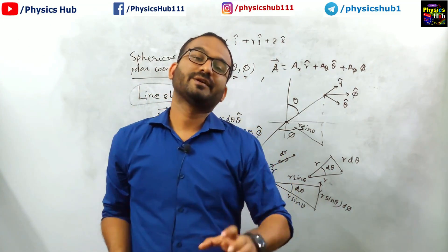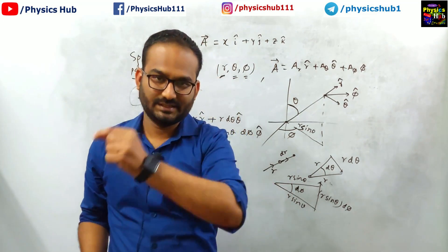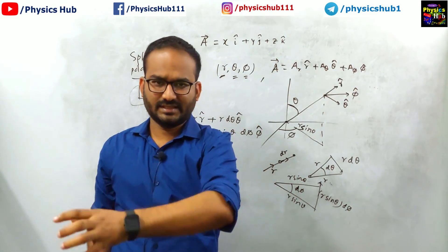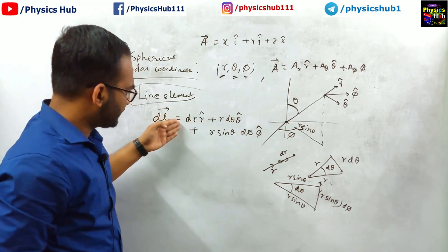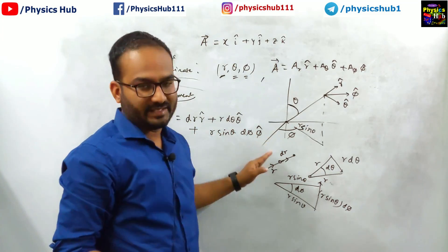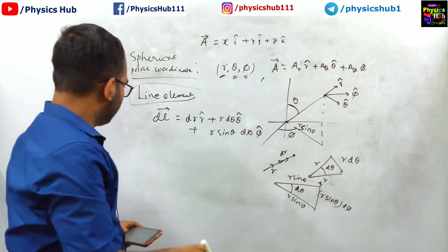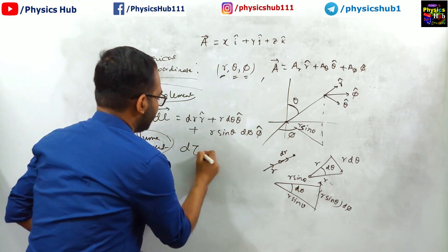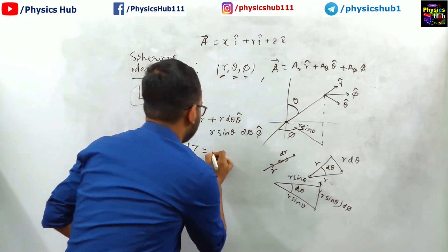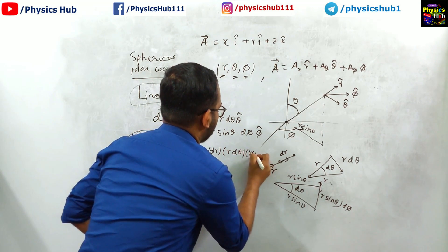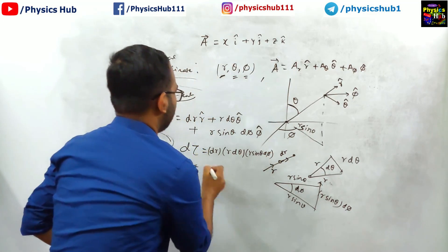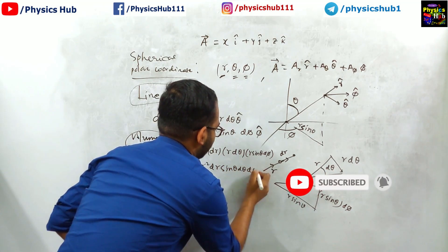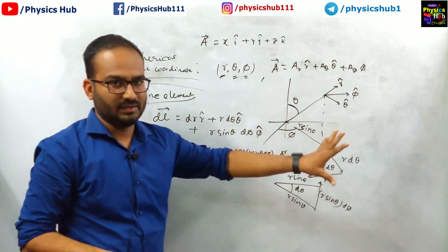Similar to the volume element dx dy dz in Cartesian coordinates, we multiply the changes along the separate directions. The change along R-cap is dR, along theta-cap is R d-theta, and along phi-cap is R sin theta d-phi. So the volume element in spherical polar coordinates is d-tau equals dR times R d-theta times R sin theta d-phi, which gives the standard result R-squared dR sin theta d-theta d-phi.